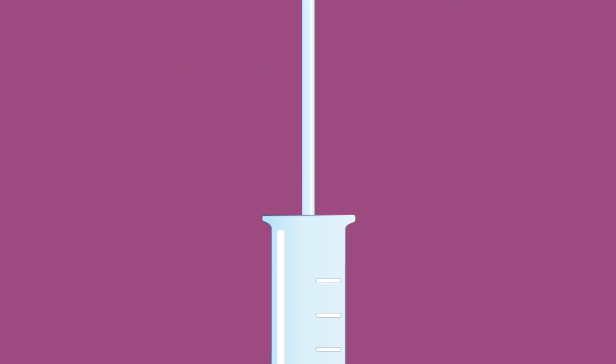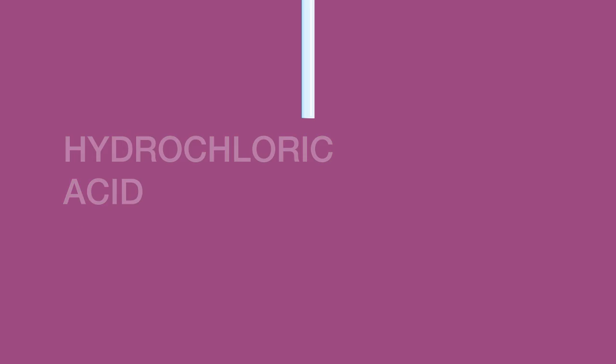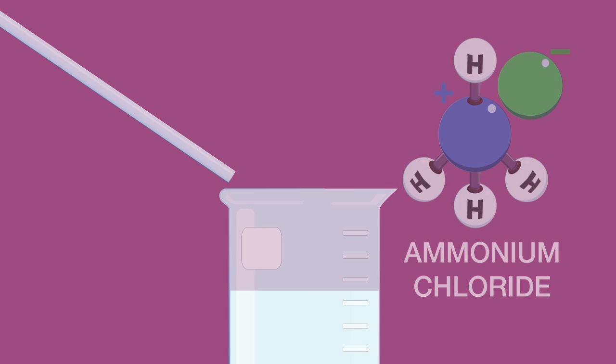Alternatively, a glass rod may be dipped in concentrated hydrochloric acid and held near the mouth of the reaction vessel. Ammonium chloride, in the form of a thick white smoke, should form.